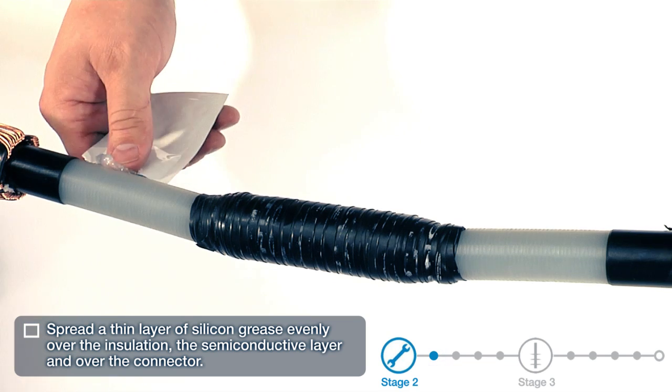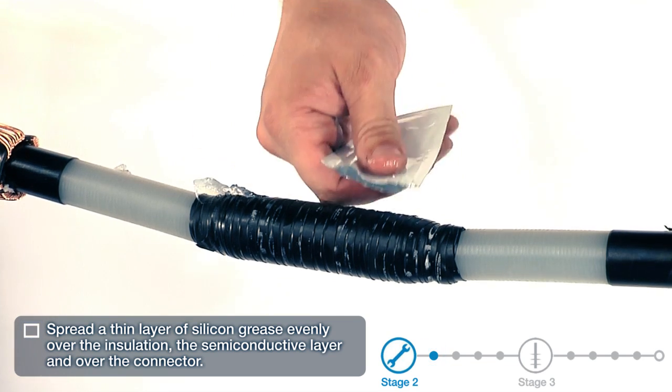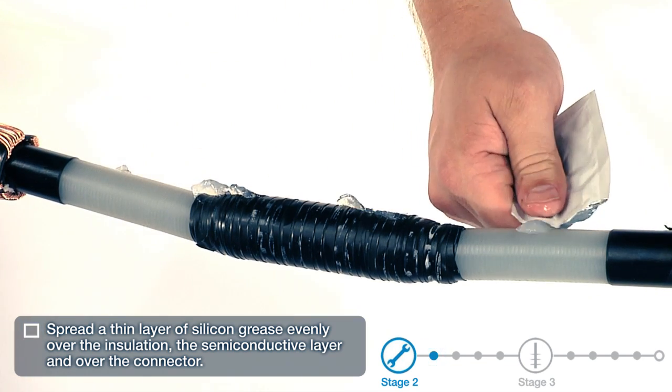Spread a thin layer of silicone grease evenly over the insulation, the semi-conductive layer, and over the connector.